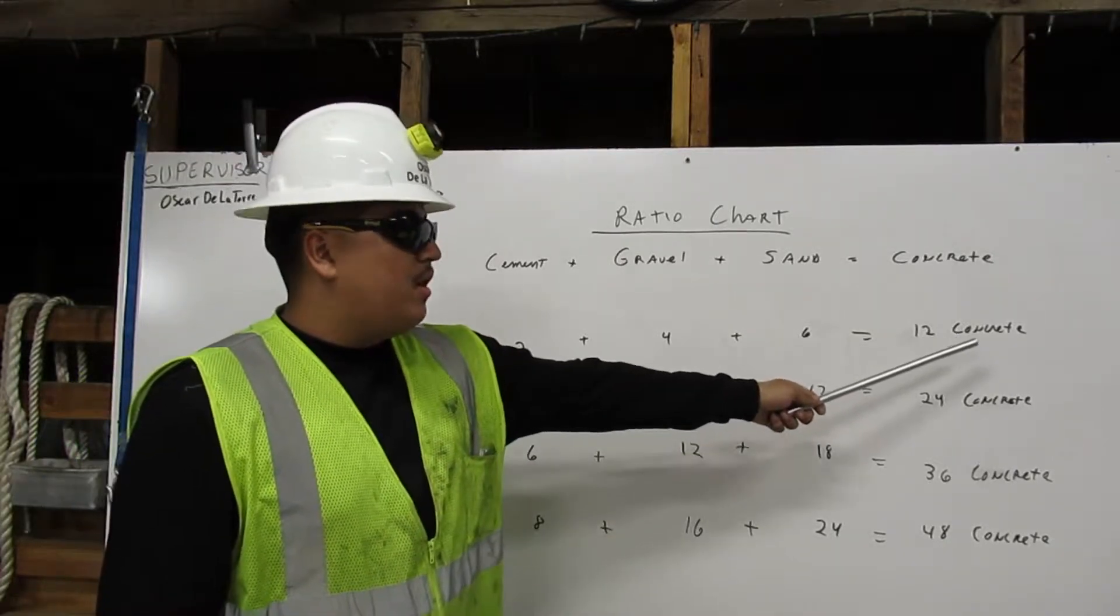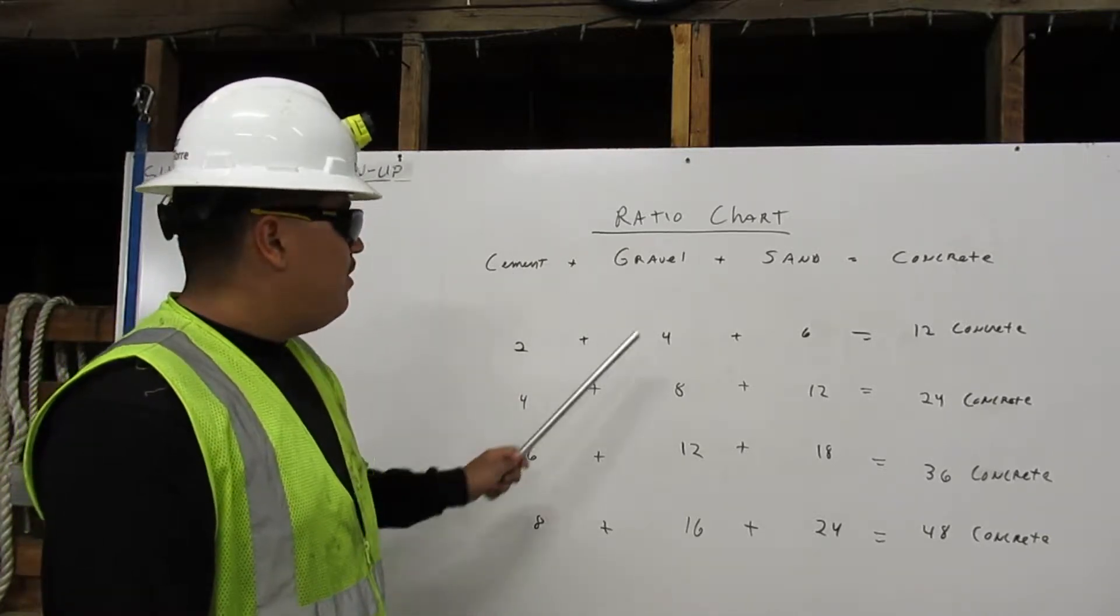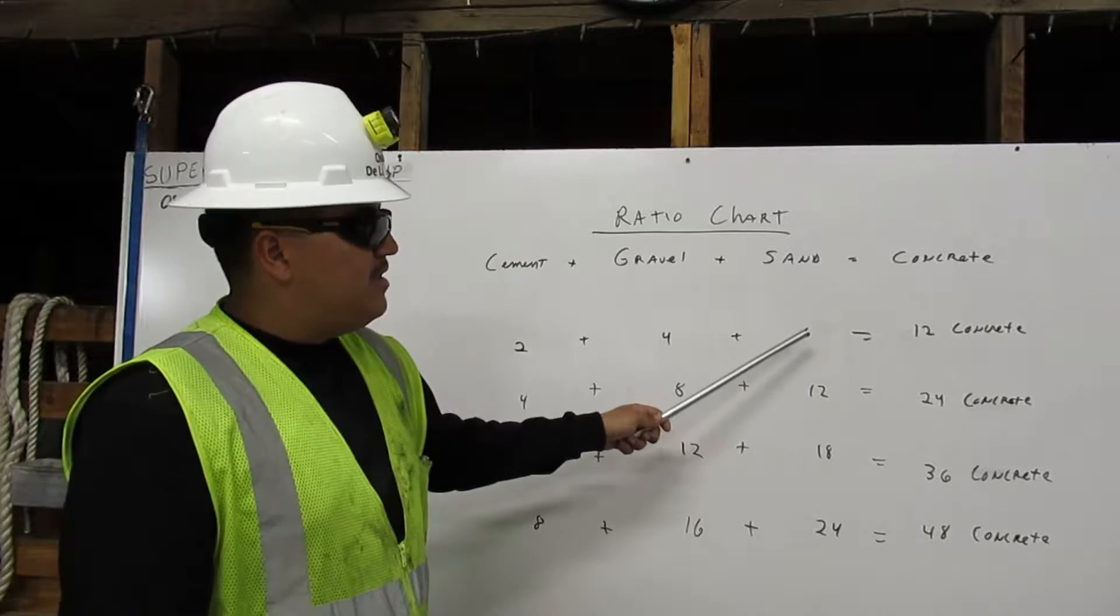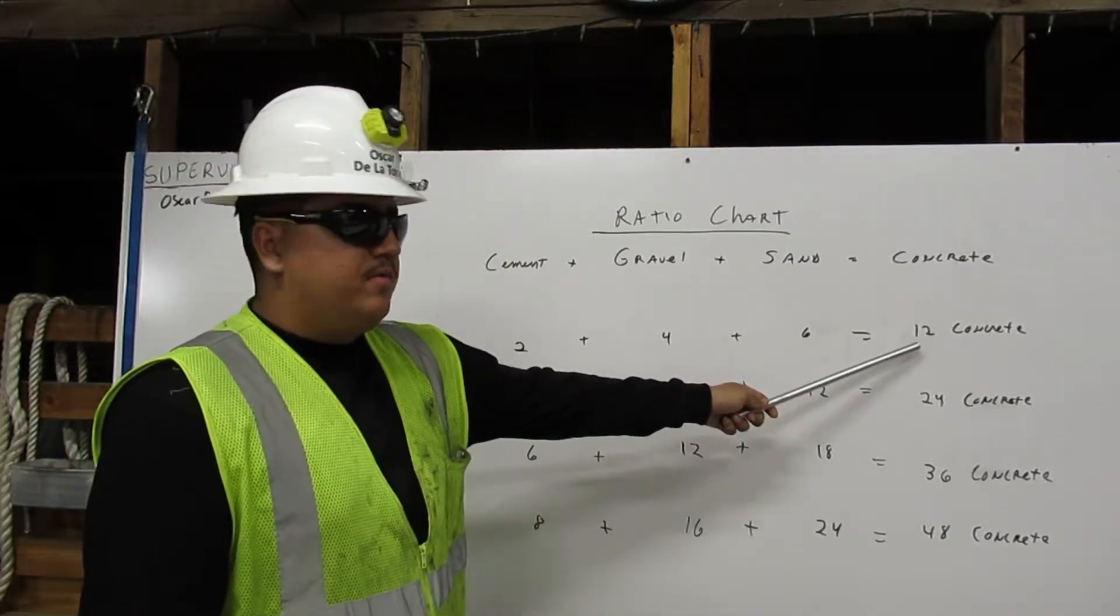To get 12 cubic yards of concrete, we're going to mix 2 cubic yards of cement with 4 cubic yards of gravel with 6 cubic yards of sand. That's how you get 12 cubic yards of concrete.